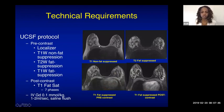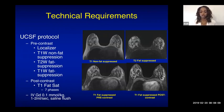The sequences include T1 non-fat suppressed before contrast, T2 fat suppressed before contrast, and pre- and post-contrast T1 fat suppressed images. We usually get seven phases of T1 fat suppressed images after contrast. We use IV gadolinium at 0.1 millimolar per kilogram, given at one to two mls per second, followed by around 10 ml of saline flush.